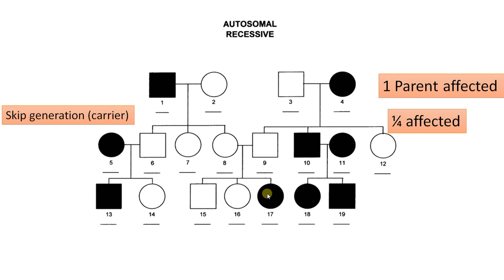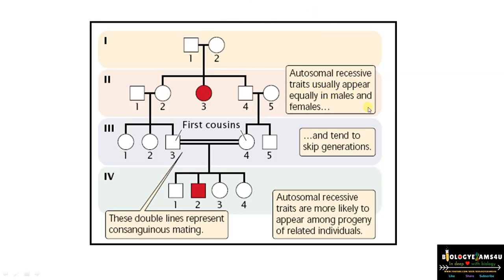One more point: autosomal recessive traits appear equally in males and females. There may be unaffected carrier individuals (heterozygous carriers) that lead to disease reappearing in later generations. The two horizontal lines in a pedigree indicate consanguineous marriage, which increases the chance of autosomal recessive traits. In the second generation there are no affected individuals, but carriers (individuals 3 and 4) lead to reappearance of affected individuals in the next generation.